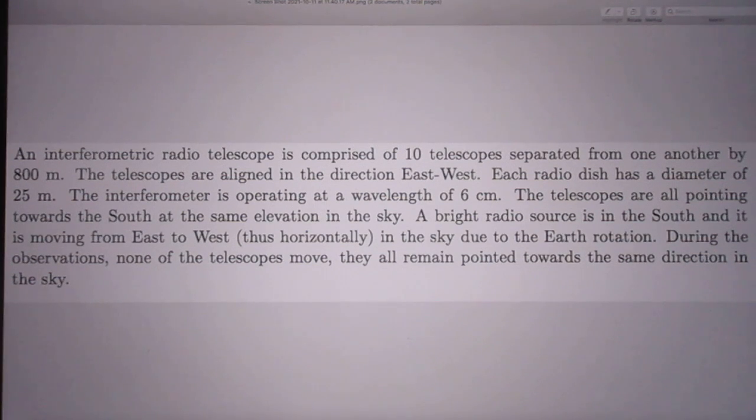The telescopes are all pointing towards the south at the same elevation in the sky. A bright radio source is in the south and it is moving from east to west, thus horizontally in the sky due to earth's rotation. During the observations none of the telescopes move. They all remain pointed towards the same direction in the sky.